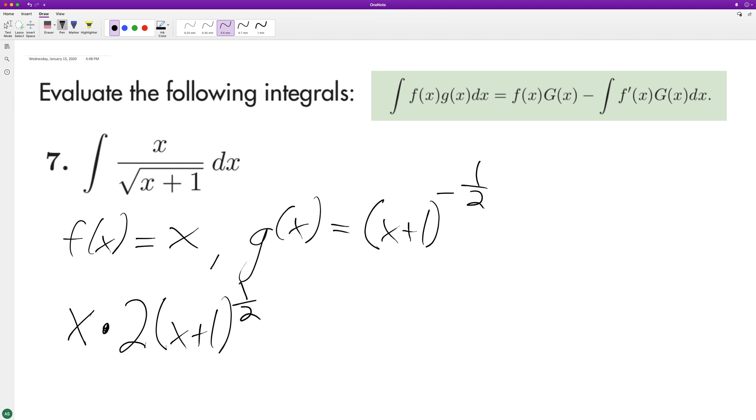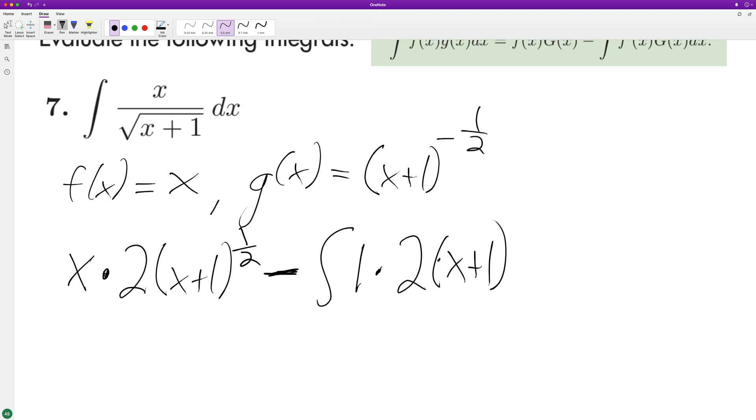Minus the integral of the derivative of f of x, which is one, times again the integral of g of x. So ultimately, we can distribute this, so it becomes two... that's one-half.